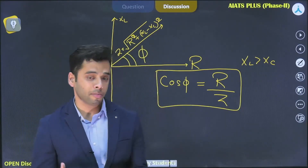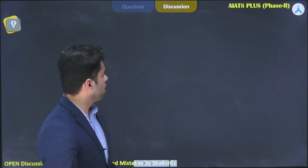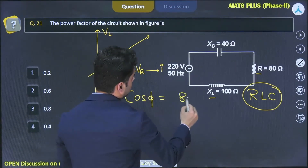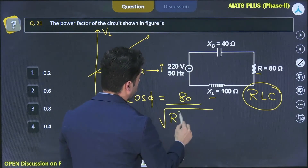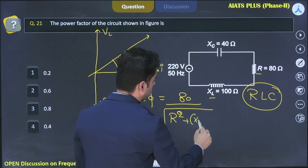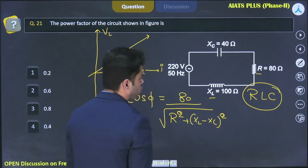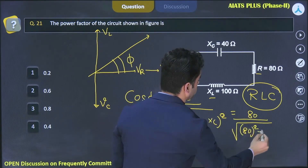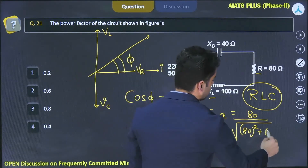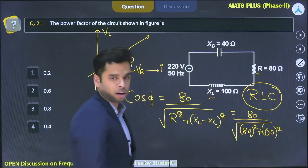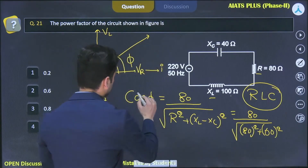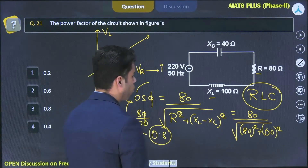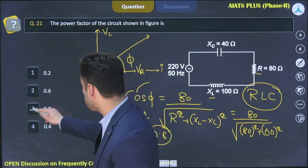Cos φ equals R by Z. The resistance R is 80. The impedance Z = √(80² + (XL − XC)²). XL − XC = 100 − 40 = 60, so Z = √(80² + 60²). This is a Pythagorean triplet: 80 and 60 give Z = 100. So cos φ = 80/100 = 0.8. The power factor is 0.8, which is option three.